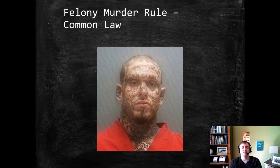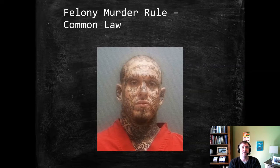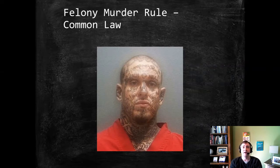In its simplest form, as the text notes, the Felony Murder Rule says that any person who commits a felony as an accomplice or is independently liable, where a death occurs during the commission of that felony, they are liable for murder for that death. There are three limitations that jurisdictions have sometimes applied, which we'll get to a bit later, but that's our basic rule.